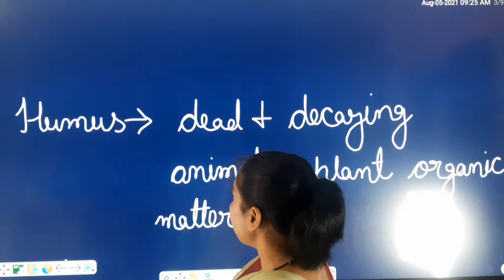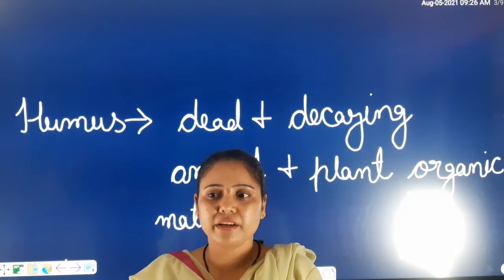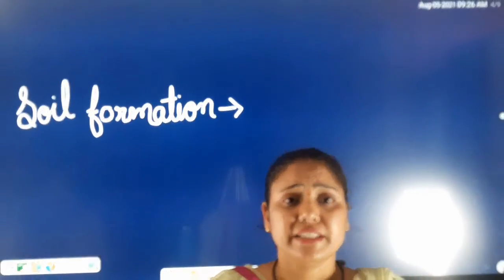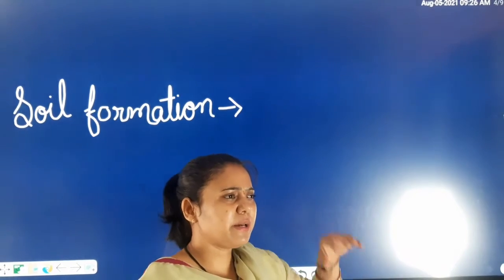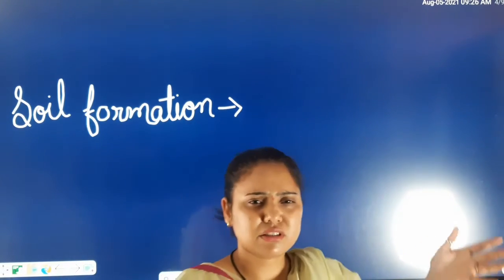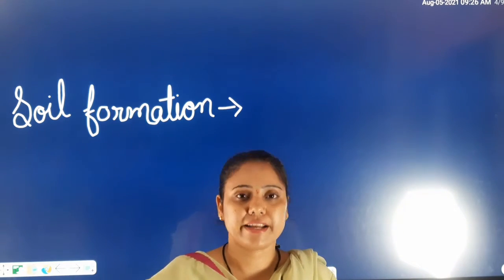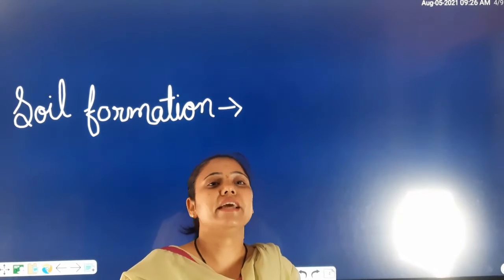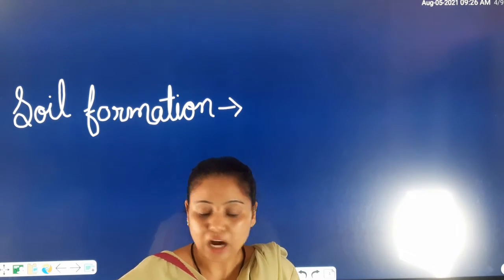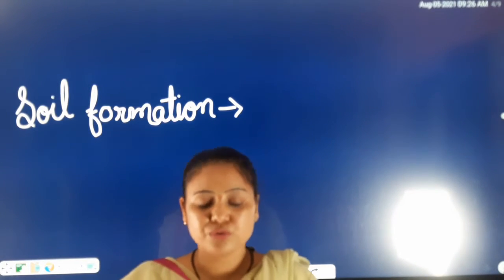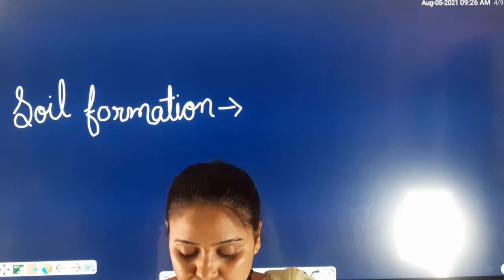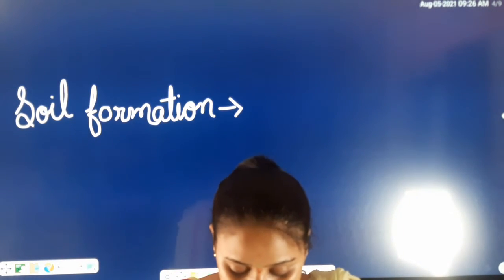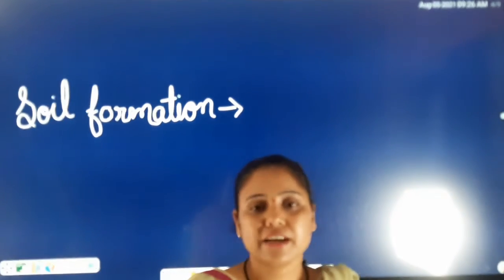Next is soil formation. Soil formation has taken thousands of years. Once the process of soil formation started, it did not stop. Thousands of years ago, there was almost no soil on the earth. Once the process of soil formation started, it did not stop. In the beginning, there were only rocks present on the surface of the earth.